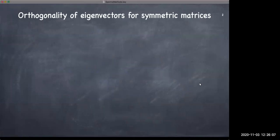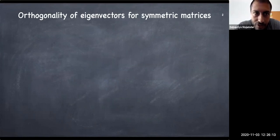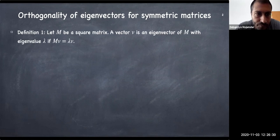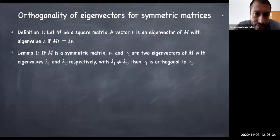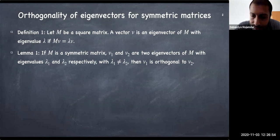Firstly, let's recall orthogonality of eigenvectors for symmetric matrices. Remember: let M be a square matrix. A vector v is an eigenvector of M with eigenvalue lambda if Mv equals lambda v. With that definition, if M is a symmetric matrix and there are two eigenvectors v1 and v2 of M with corresponding eigenvalues lambda1 and lambda2, where the eigenvalues are different, then the eigenvectors are orthogonal to each other.